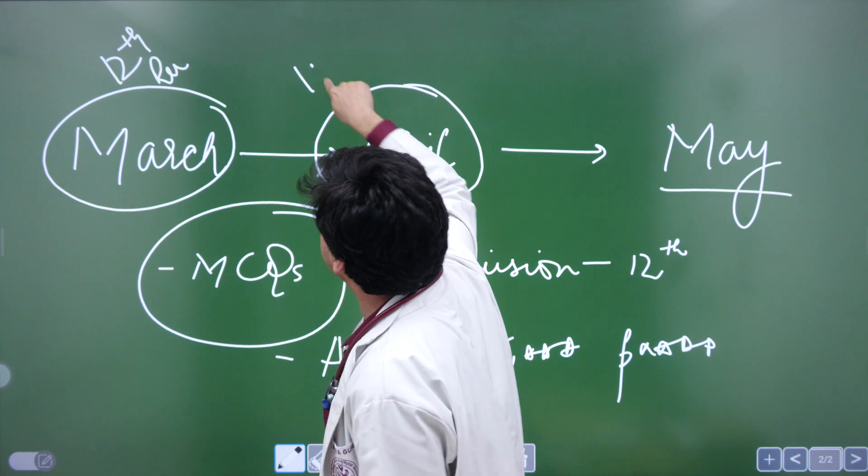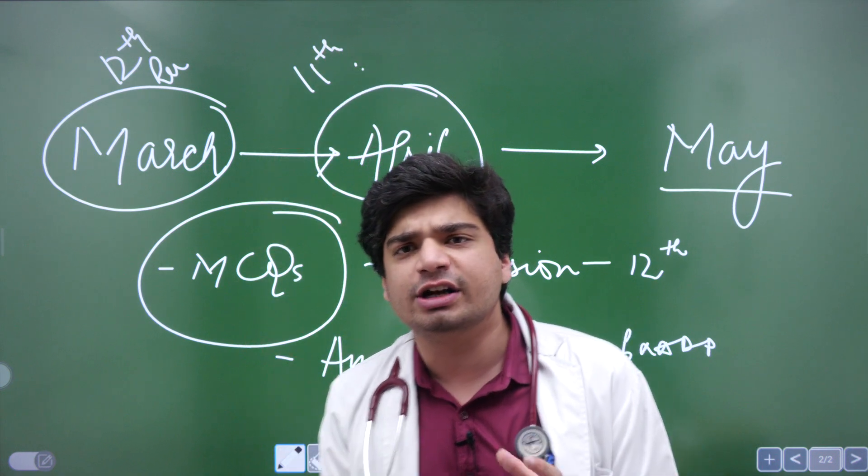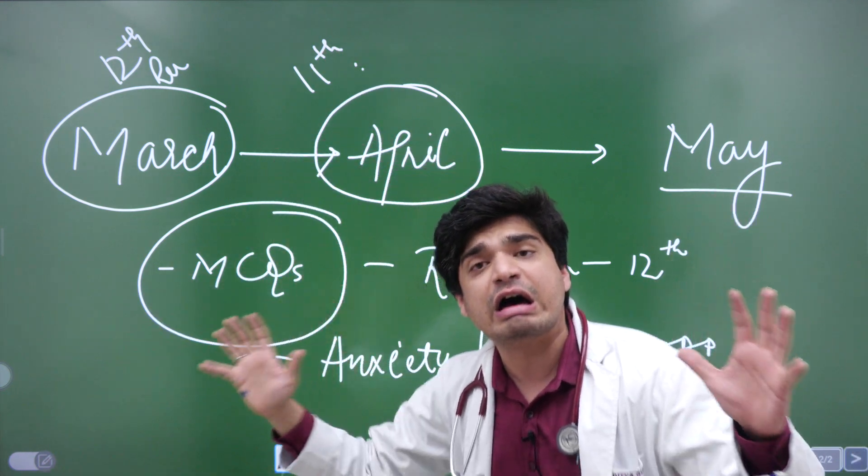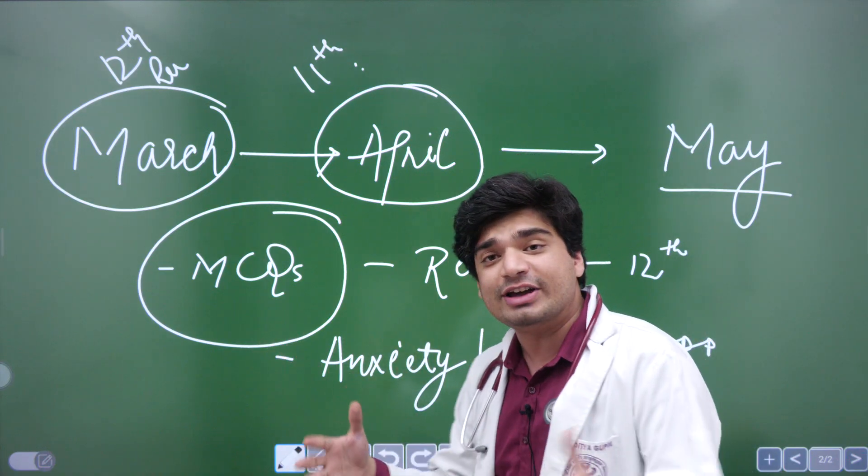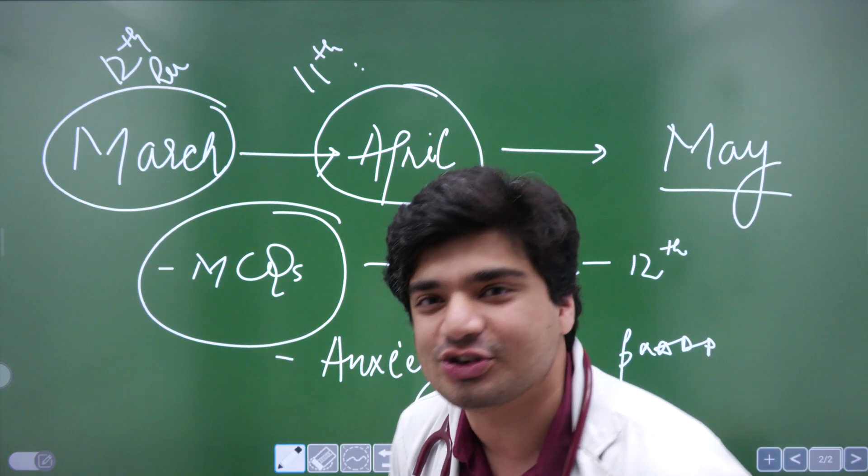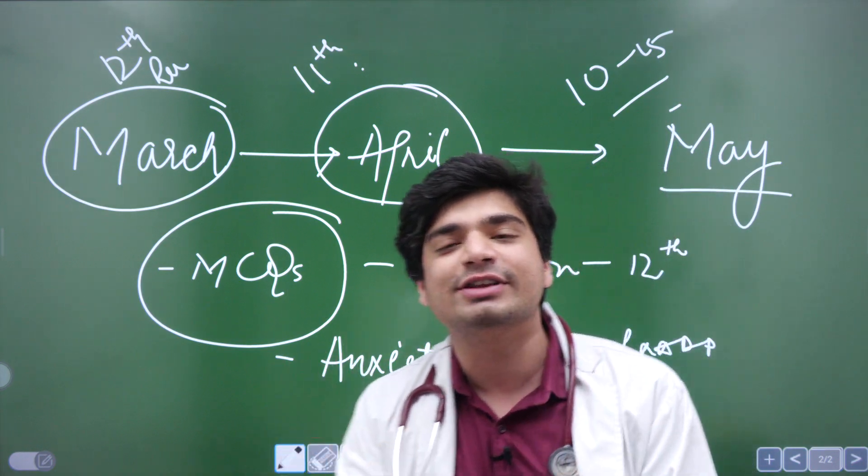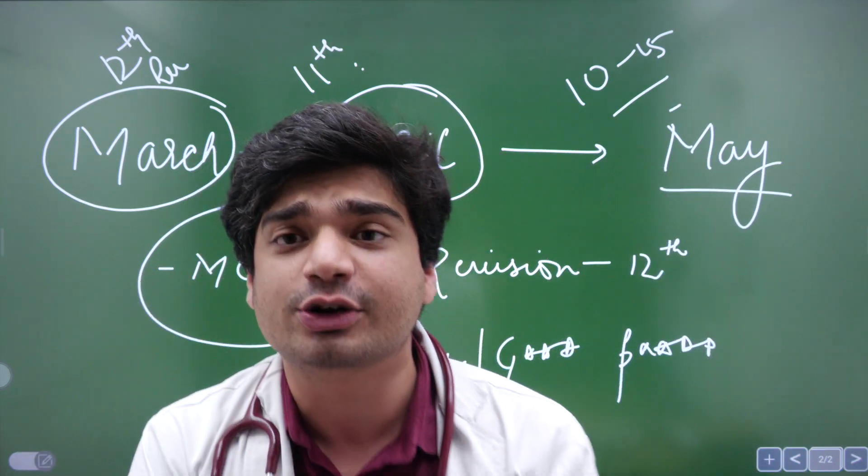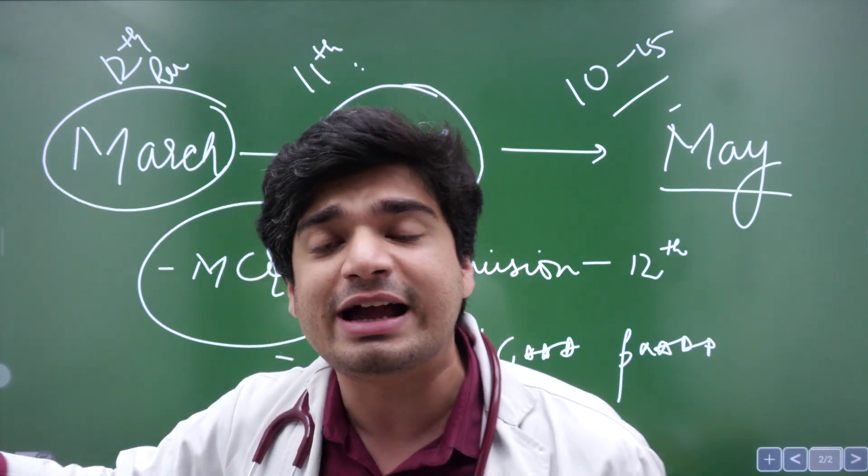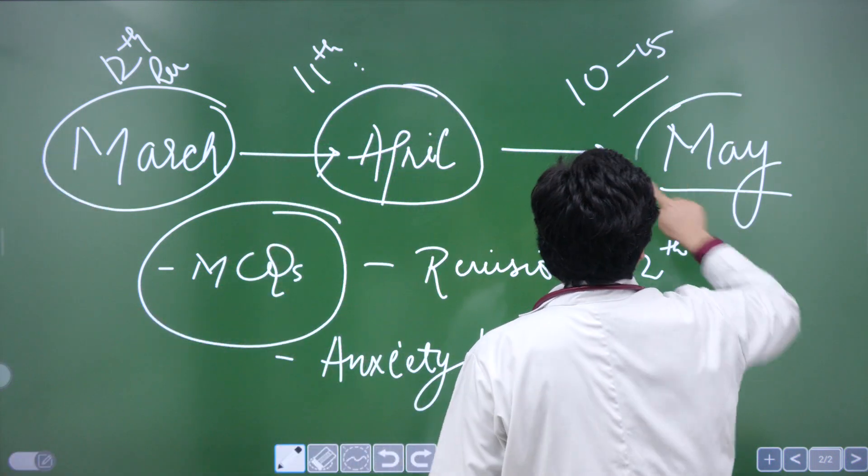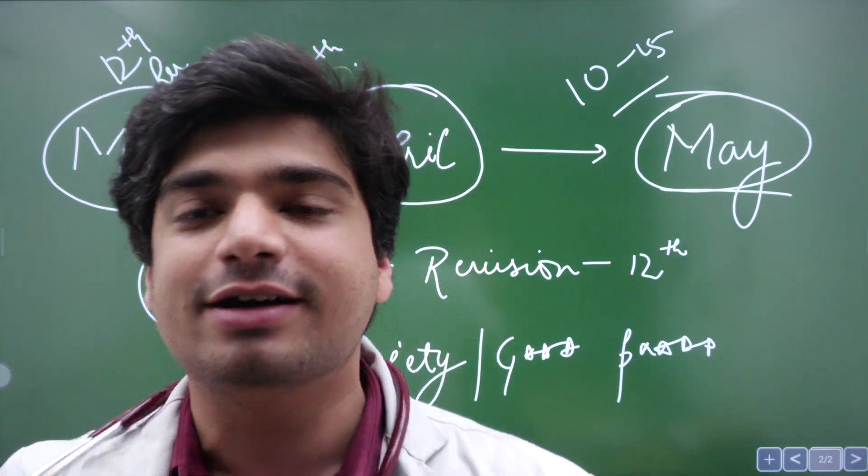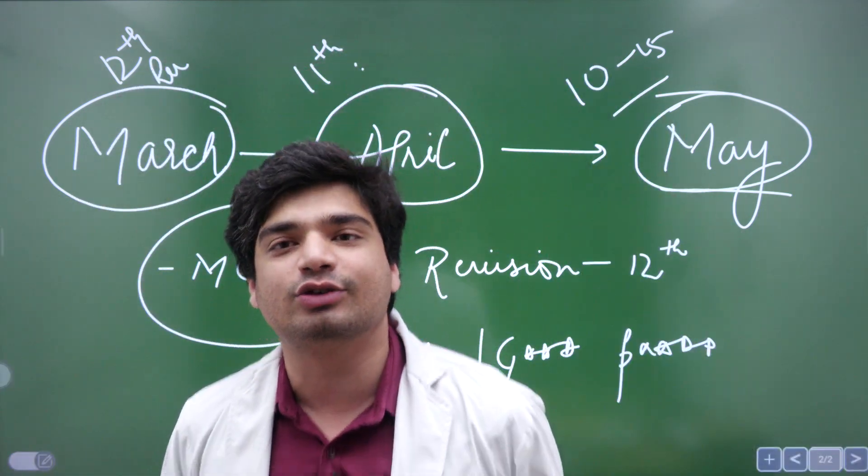In April you do 11th revision and try to finish it in 20 or 25 days and the last 10 to 15 days, something which I emphasize as far as postgraduate entrance examination was also concerned. In the last 10 to 15 days, you revise your 11th and 12th standard, the most important topics, the things that you tend to forget, the concepts that you are weak at, you revise that and on the exam day, you go and hit a six and get the rank that you desire, get this coat, get this stethoscope.